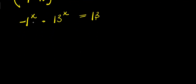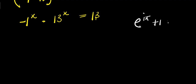So from here, I need to make use of this identity: if you have e to the power of i times pi, plus 1, this equals 0.